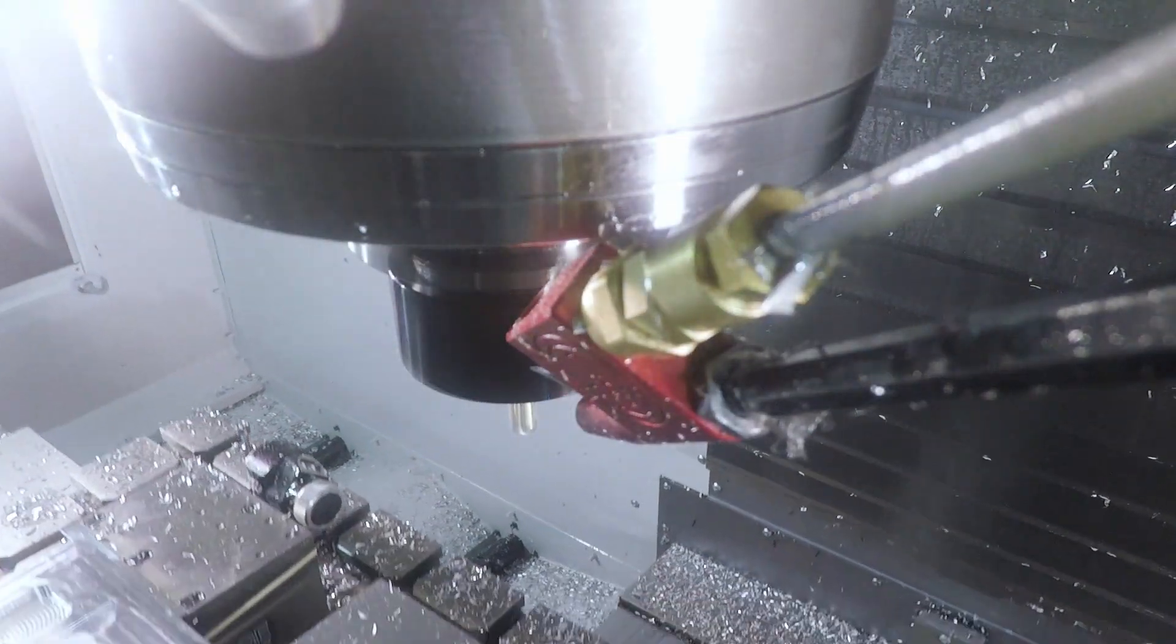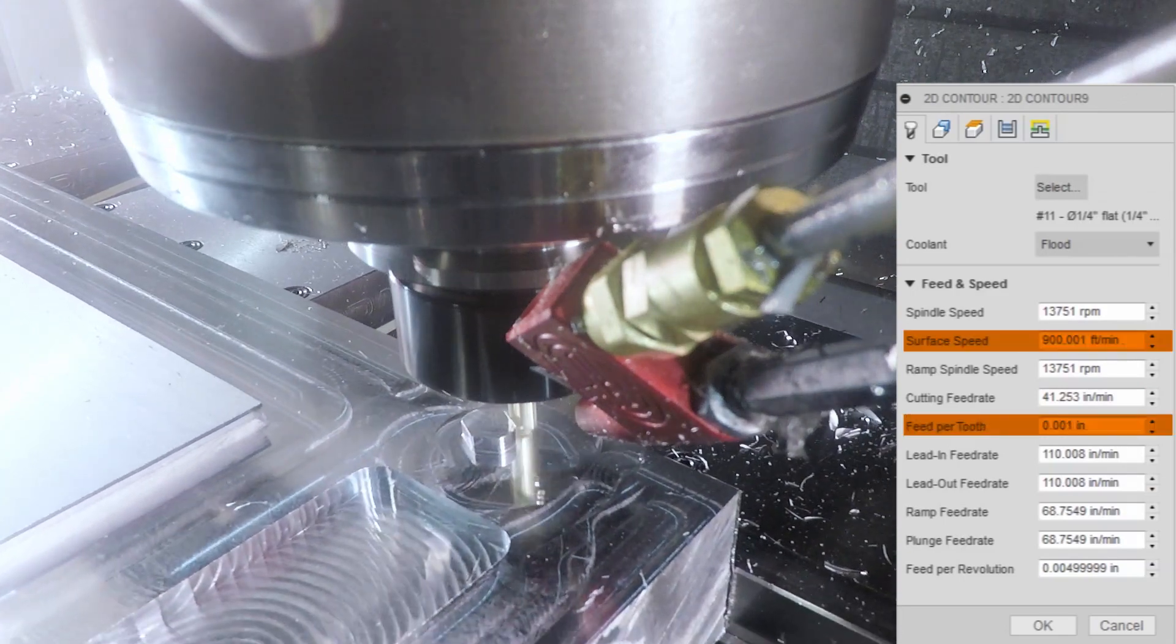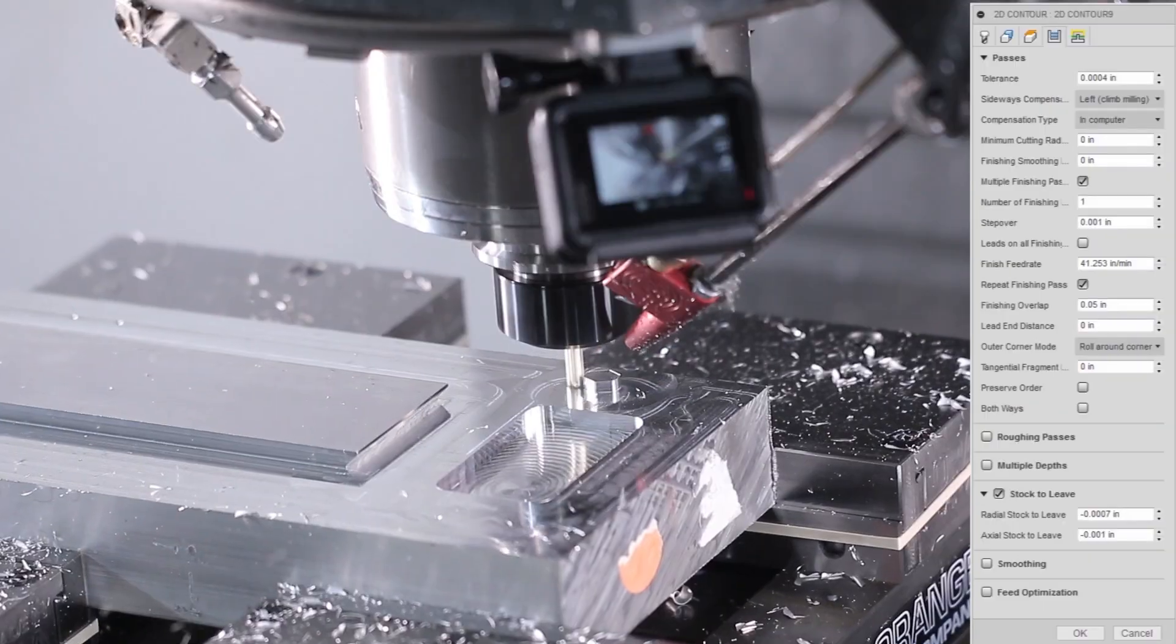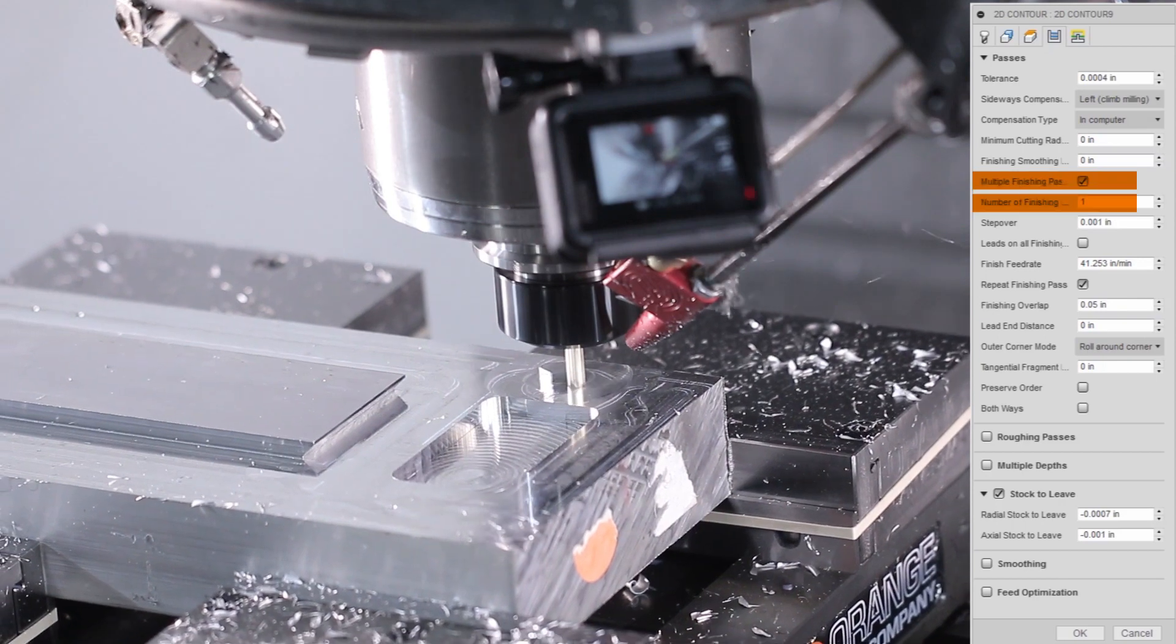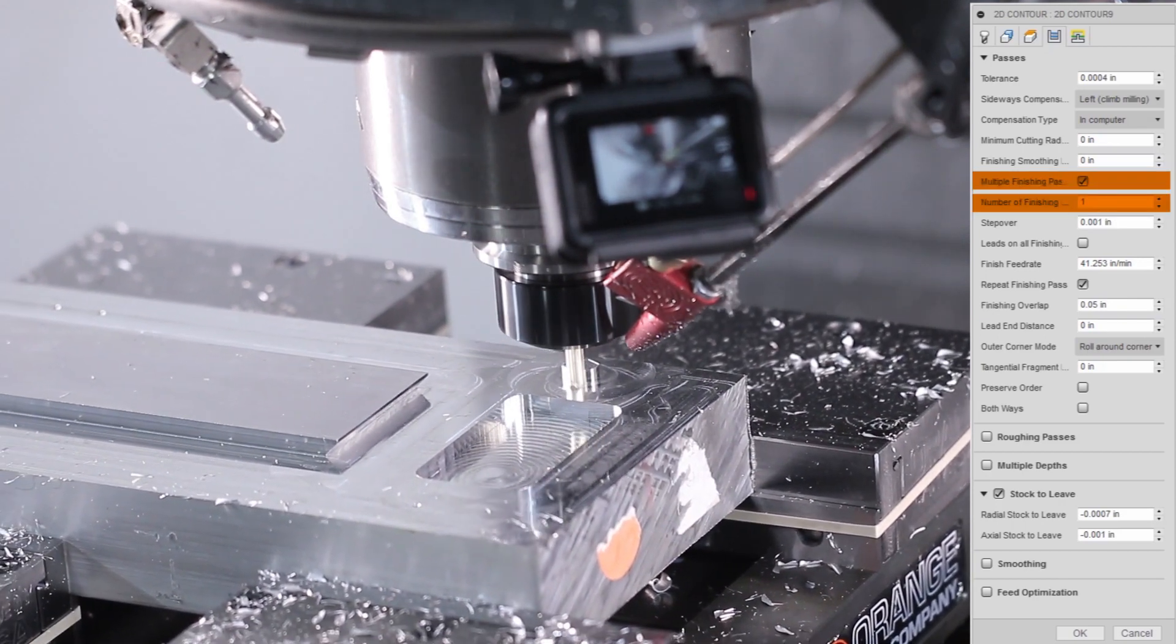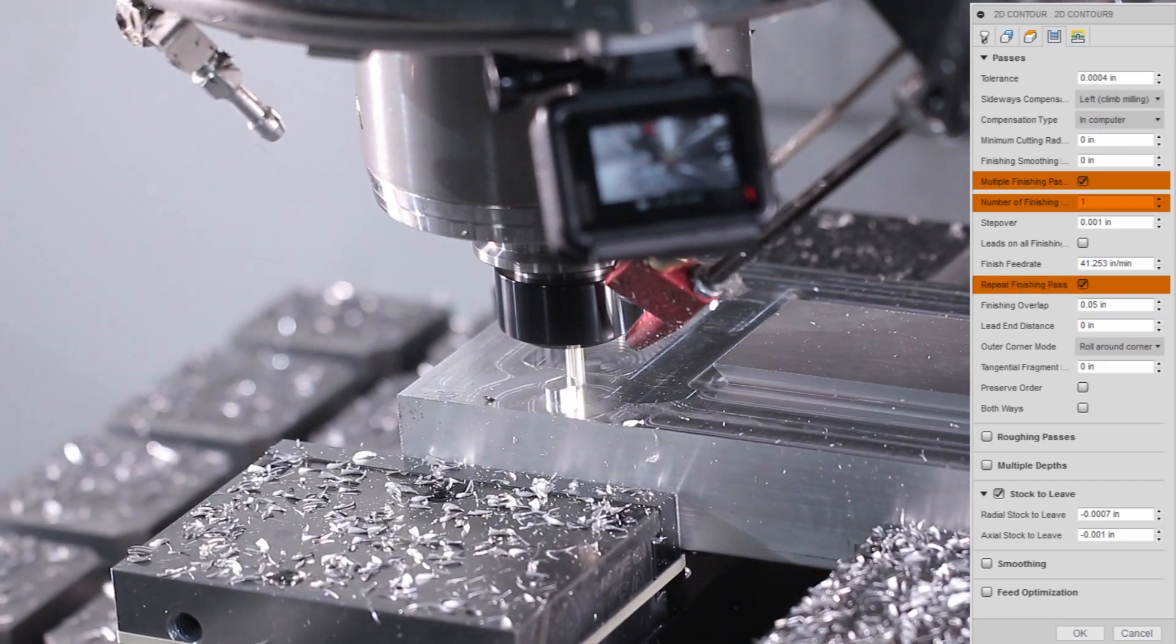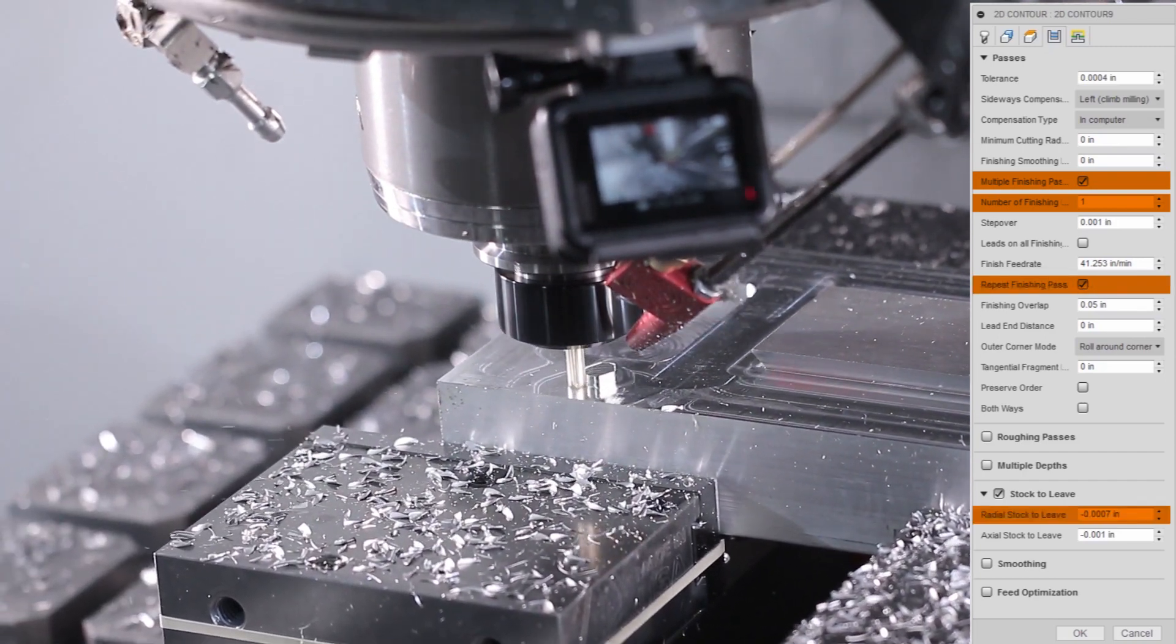Then coming in with a quarter inch tool and cleaning up the diamond pin. This is obviously a very critical dimension. What we did with the 2D contour: 900 surface feet, 0.001 per tooth, and under passes we have one finishing pass which is at a 0.001 inch step over, then we have repeat finishing passes on so it's going to walk around this a couple of times.